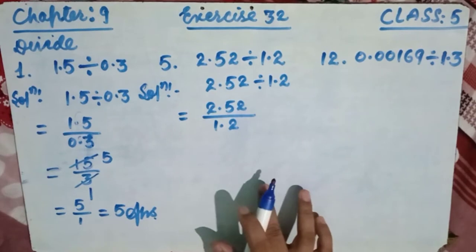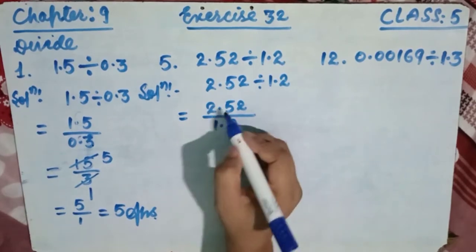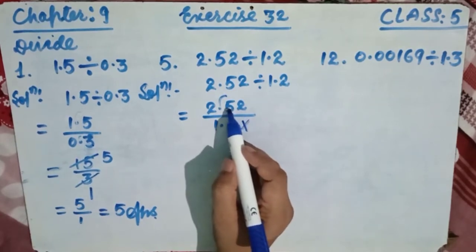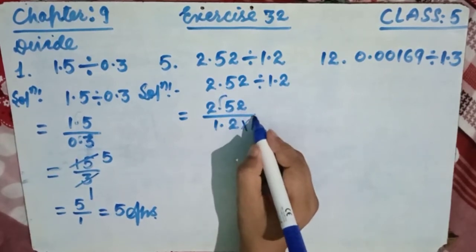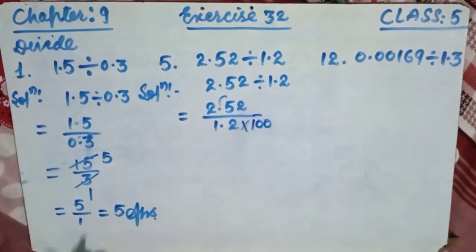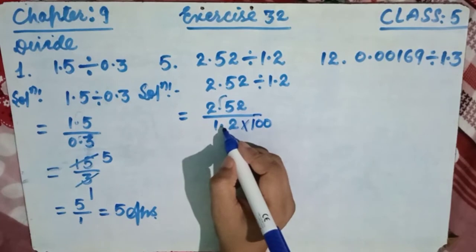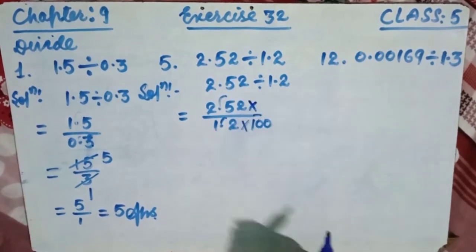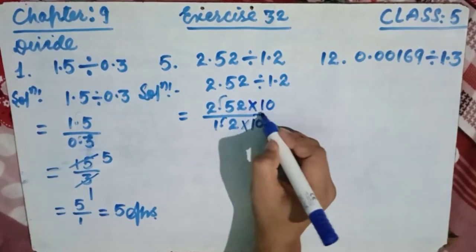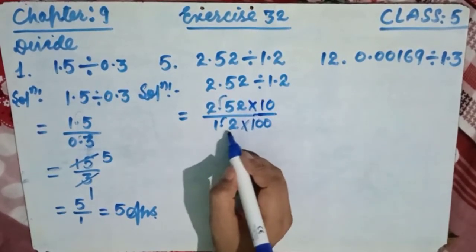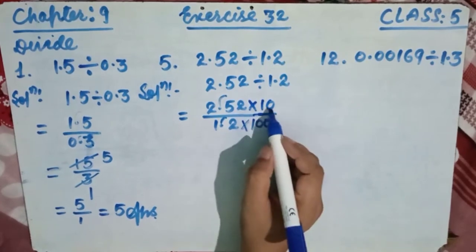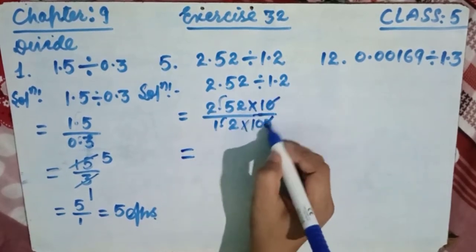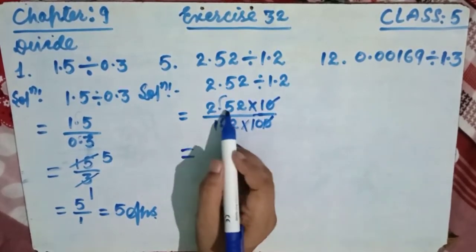To remove the decimal from the numerator, we count 2 digits after decimal, so we write 100 in the denominator. To remove the decimal from the denominator, we count 1 digit after decimal, so we write 10 in the numerator. This gives us 252 times 10 over 1.2's equivalent, simplifying the expression.